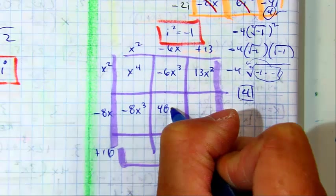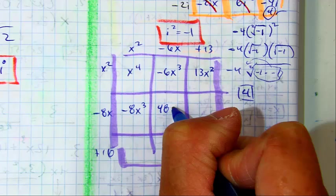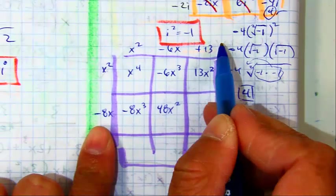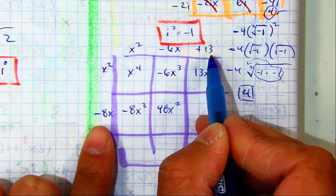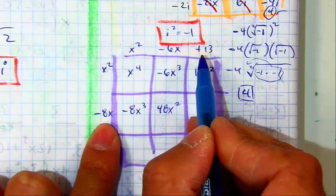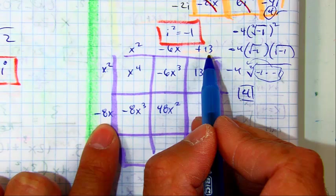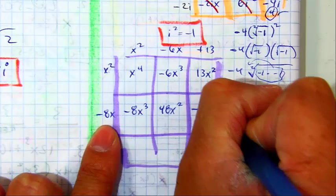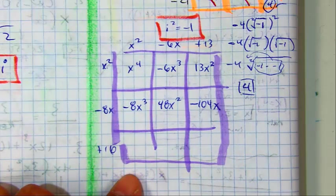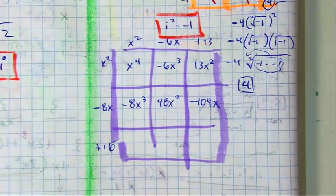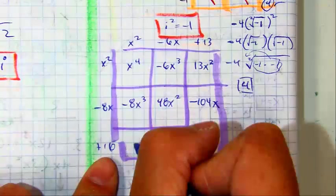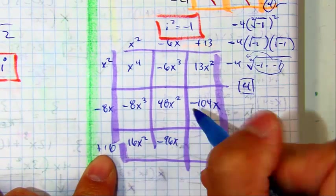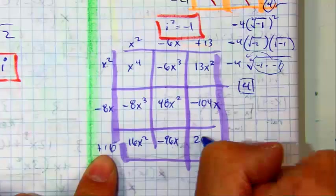X. X squared. Squared. Nathan, pick the next person. Go. 16X squared. Negative 96 X. Pick the next person. All right, Catherine, we just have to combine like terms, and then we have our answer.